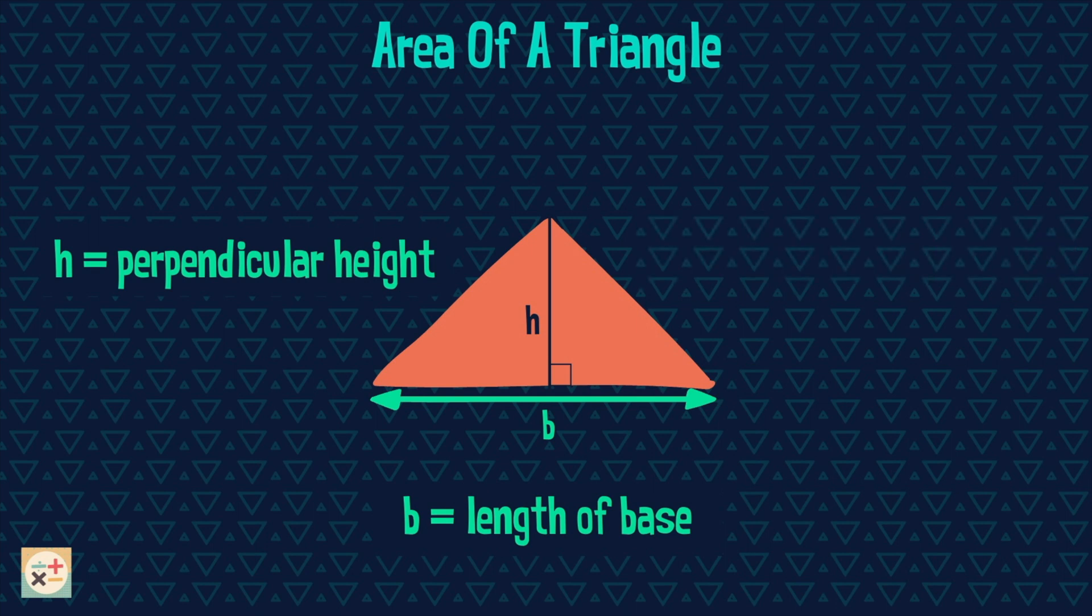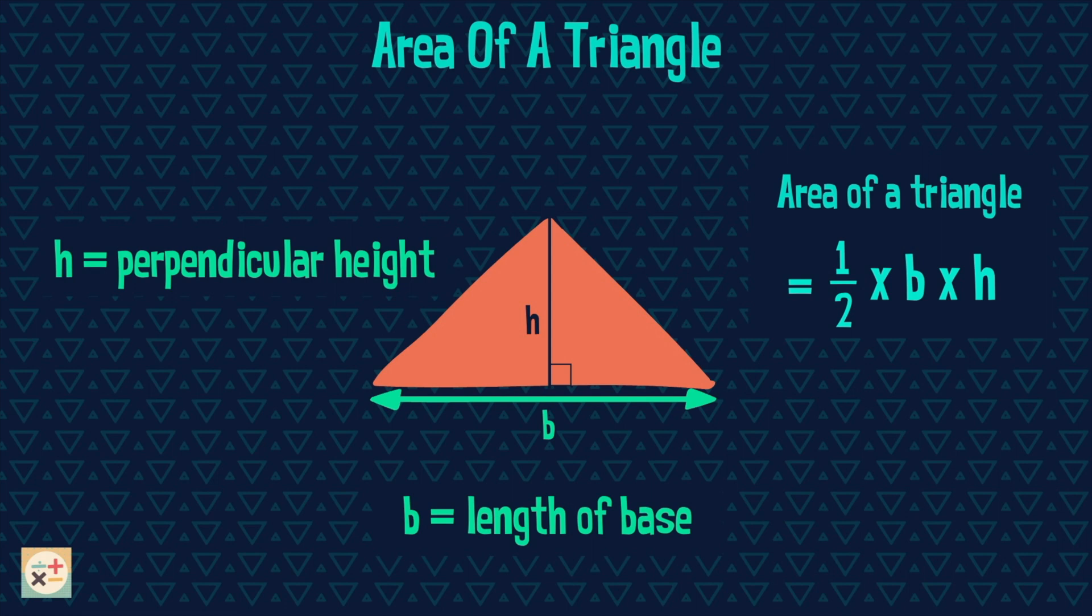When we know these measurements we can use this formula for working out the area of the triangle. We multiply the base with the height and then halve it. You can also write the formula in this way. Both of these are the same as we are halving the base times the height.